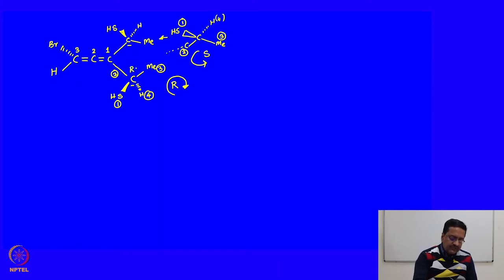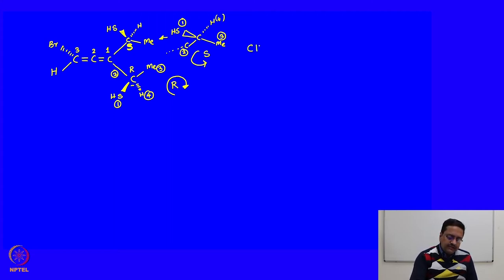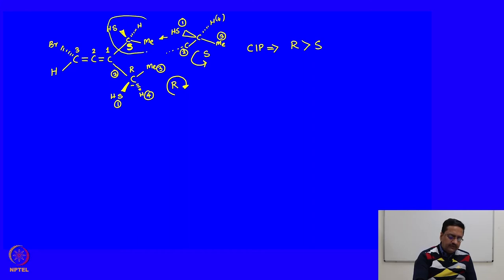The absolute configuration of the bottom center is R and the top center is S. Now we need to know whether R or S gets priority when they are compared among themselves. According to CIP nomenclature rules, R gets priority over S. Let us assume the name of this group as A, so the group with S configuration is A.